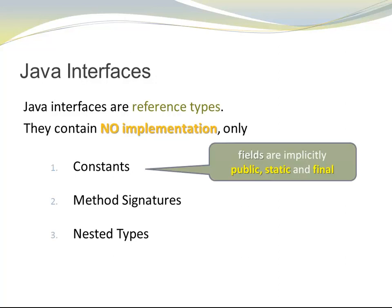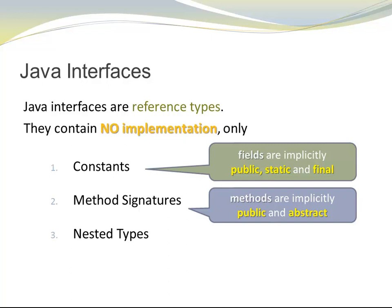The constants are fields that are implicitly public, static, and final. The method signatures are methods that are implicitly public and abstract. And nested types could be, for example, an enum. Every field an interface can contain is always a constant. Every method an interface can contain is an abstract method. And yes, there can be nested types. All interface members are public.